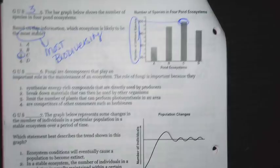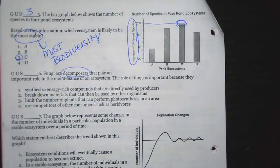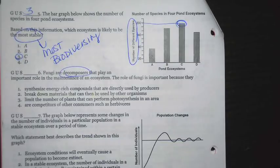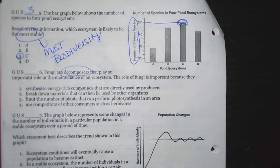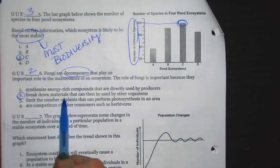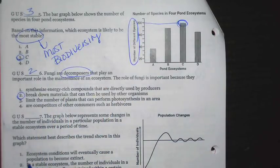Fungi are decomposers. Decomposers recycle dead organic material, or sometimes they'll say recycle nutrients that play an important role in the maintenance of an ecosystem. The role of fungi is important because they - the correct answer choice here is two: break down materials that can then be used by other organisms.